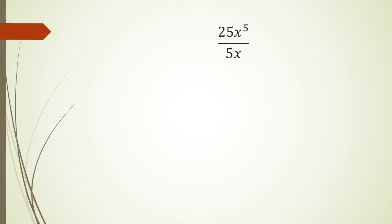Moving on to the next question or next type of question. This time we're putting a number in front, so we've got 25x to the power of 5 over 5x. Now we know that 25 divided by 5 is going to be 5.